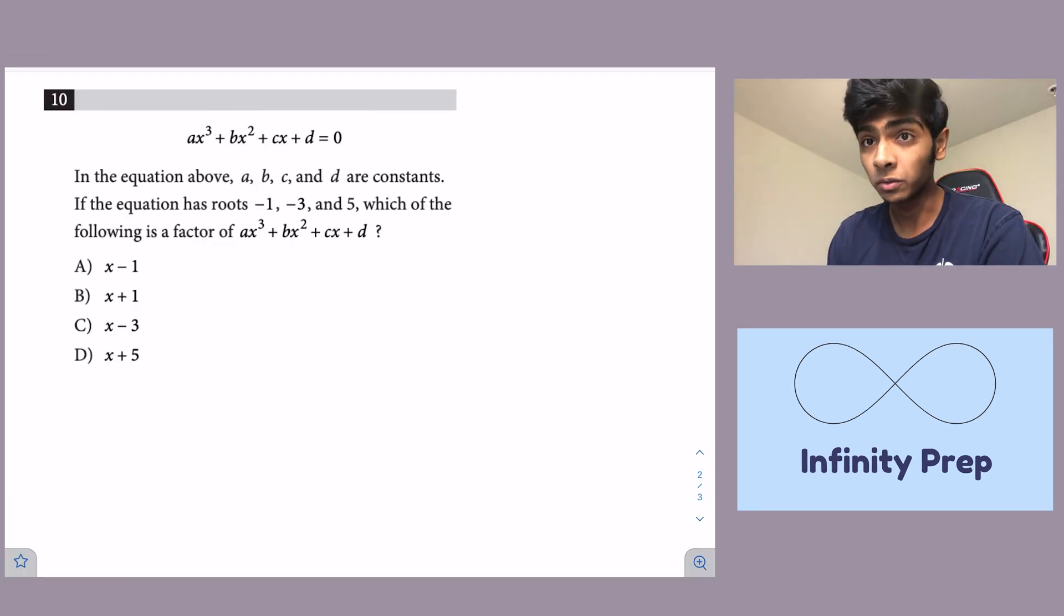Okay, so now let's go on to number 10. Number 10 states that in the equation above, a, b, c, and d are constants. If the equation has roots negative 1, negative 3, and 5, which of the following is a factor of the equation above?